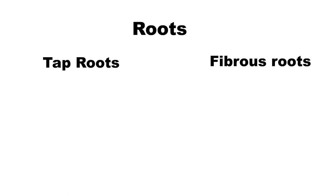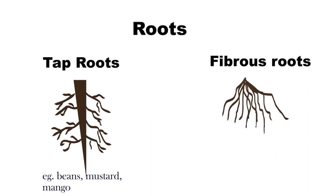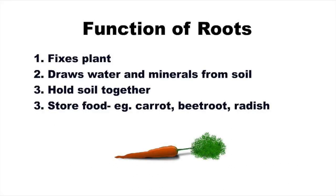There are two types of roots. Tap roots have one main root from which grow out small rootlets. Examples are beans, mustard and mango. Fibrous roots have many thin and bushy roots growing at the end of the stem. Examples are rice, wheat and grass.